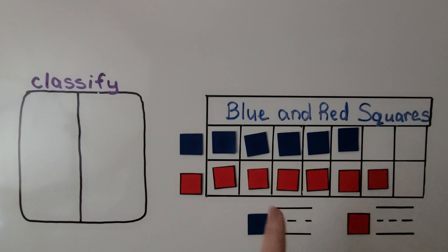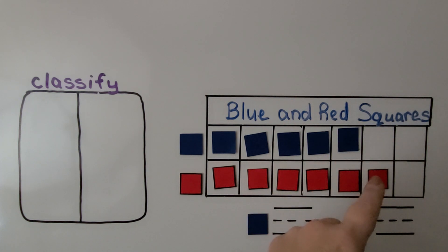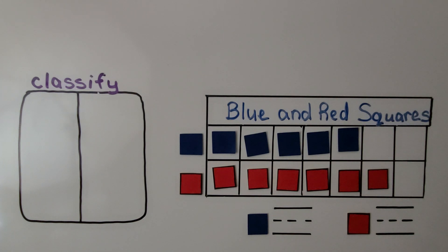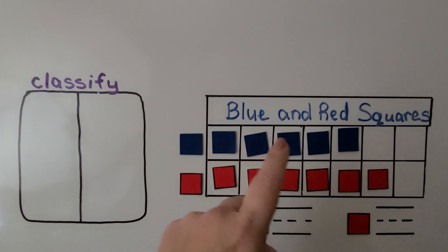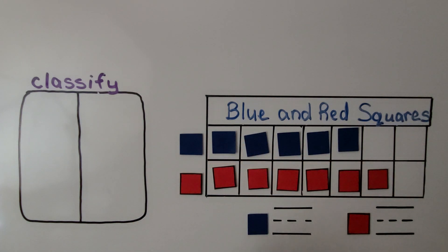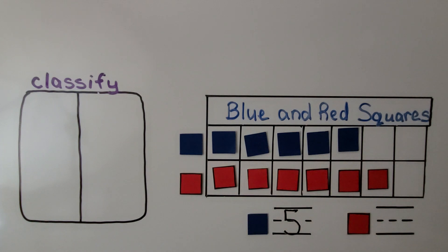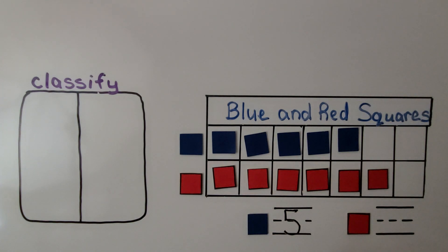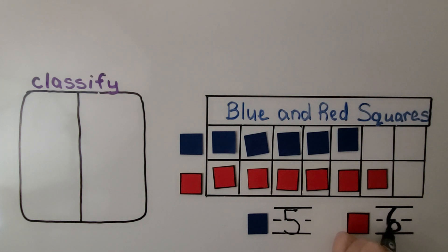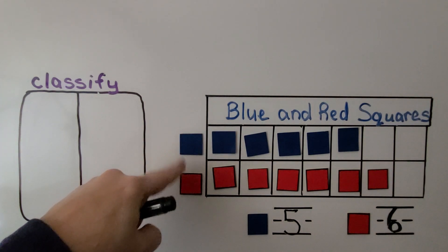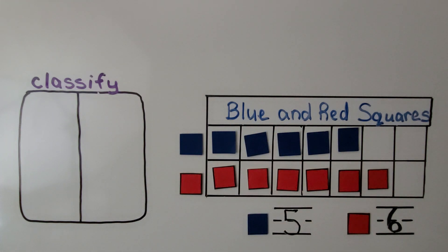There are fewer blue squares than red squares. We can see the blue squares don't stick out as far as the red squares do. We can count the number of blue squares and red squares in the graph. For blue we have one, two, three, four, five — and we can write the number five. For the red squares we count one, two, three, four, five, six — and we can write the number six. Remember, we don't count the picture labels; these are here just to tell us which row these are. We have five blue and six red.